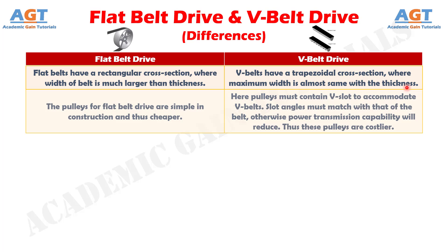Number 2: the pulleys for flat belt drive are simple in construction and thus cheaper, whereas in V-belt drive, pulleys must contain a V-slot to accommodate V-belts. Slot angles must match with that of the belt, otherwise power transmission capability will reduce. Thus these pulleys are costlier.